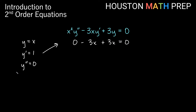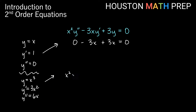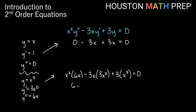There's another basic-looking solution: y equals x cubed is also a solution for this equation. With y = x cubed, y prime = 3x squared, and y double prime = 6x. Plugging in: x squared times 6x gives 6x cubed, minus 3x times 3x squared gives negative 9x cubed, plus 3 times x cubed gives 3x cubed. We get 6x cubed minus 9x cubed plus 3x cubed, which equals 0. So y equals x cubed is confirmed as a solution.